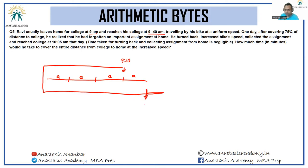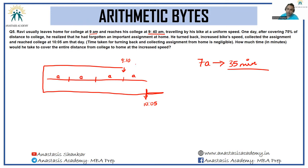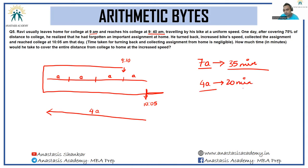Ravi travels 3a backward (home) and then 4a forward (college), totaling 7a at the increased speed, arriving at 10:05 am — that is 35 minutes after 9:30 am. So 7a is covered in 35 minutes at increased speed. For college to home (4a), time = (4/7) × 35 = 20 minutes.